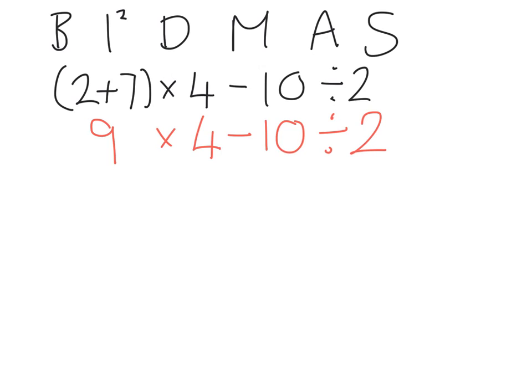So I put my 5 underneath there and then I write in the rest of the calculations because it helps me to keep it all organised in my head. So I've got now 9 times by 4, take away 5. So I've done brackets, no indices, I've done division, so the next bit is multiplication.